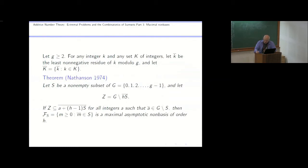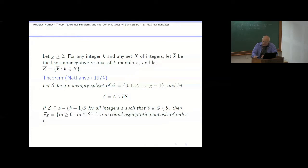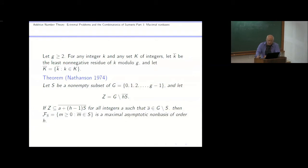In the original paper on this subject, the only examples of maximal asymptotic non-bases that were known were constructed as unions of congruence classes. This first somewhat ancient result is really just a characterization of unions of congruence classes that form asymptotic non-bases. It's a little bit technical to write down, but it shows that a lot of these maximal asymptotic non-bases of congruence classes exist and in some sense describes them.